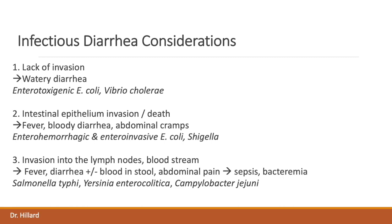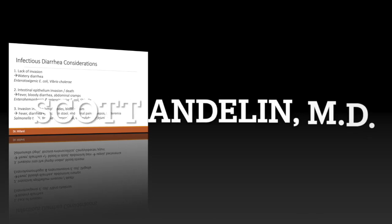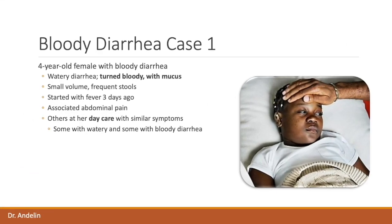Now that we have refreshed these ideas, let's start with the clinical cases. In this series of scenarios, we will be discussing common causes of bloody diarrhea. In our first case, we have a four-year-old female who has three days of diarrhea that began watery and then turned bloody with associated mucus. She's having small volume but frequent stools. Her illness began with fever for several days and she has associated abdominal pain. Several other children and some adults at her daycare are experiencing similar symptoms, some with watery and some with bloody diarrhea.